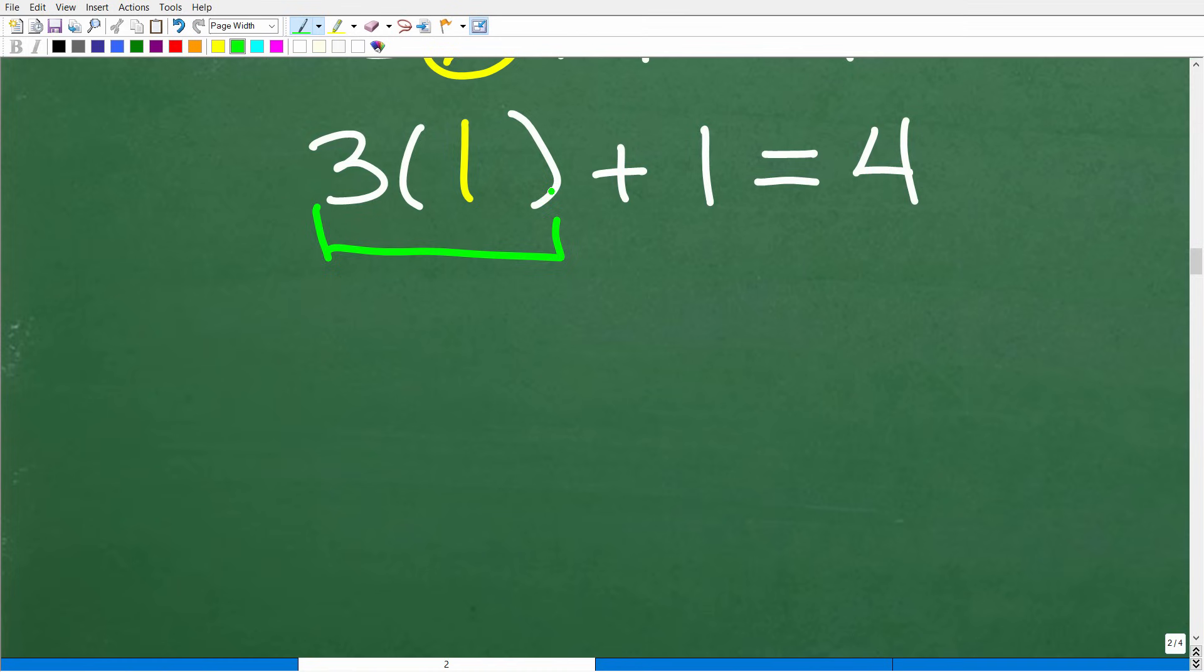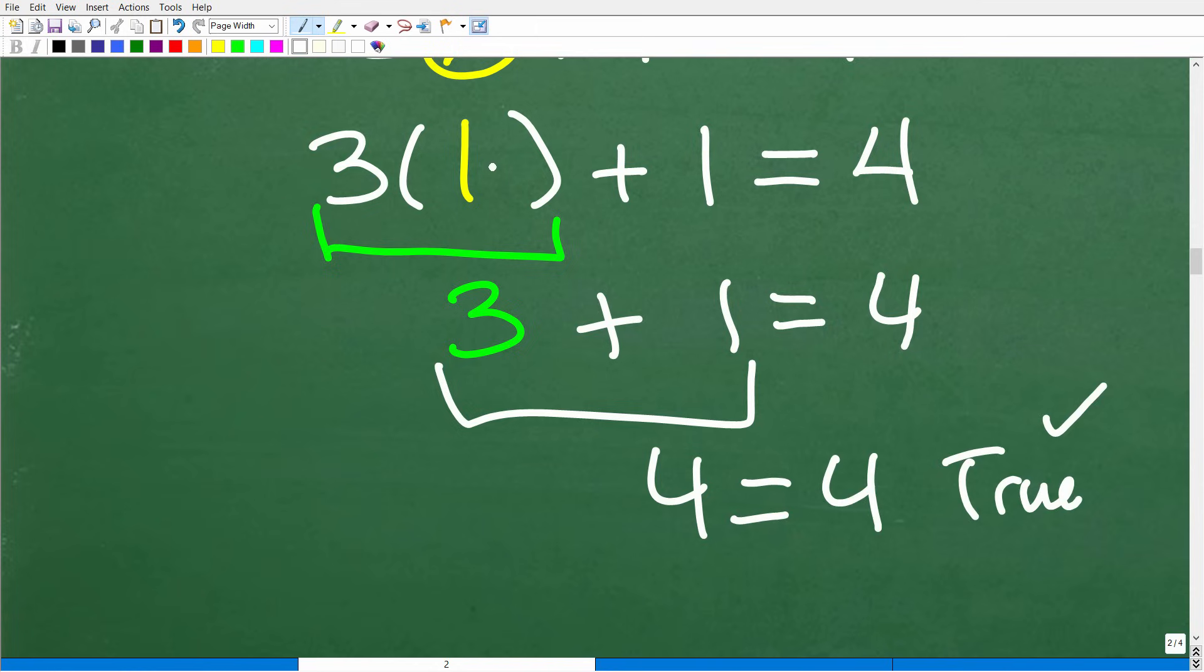OK, so what do we have here? Well, this is three times one. And three times one, of course, is three. So three plus one, is this equal to four? Well, three plus one is four. Four is equal to four. This is true. So therefore, one is a good solution.